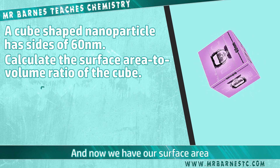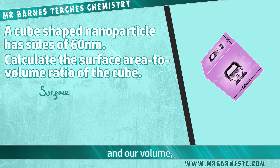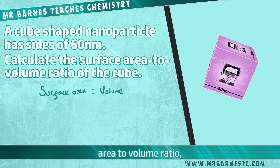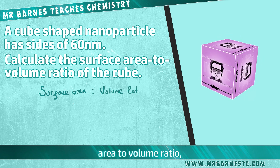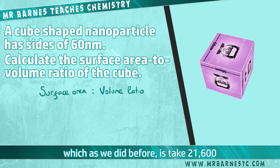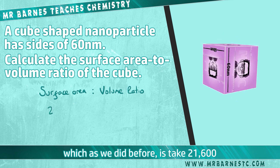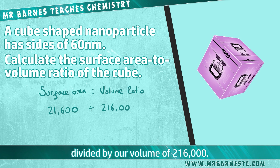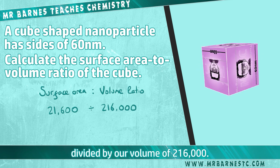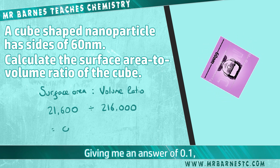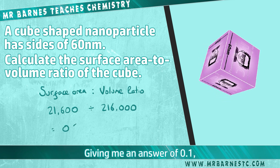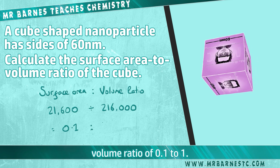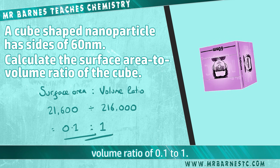Now we have our surface area and our volume, so we can use these two values to work out our surface area to volume ratio. As we did before, we take 21,600 and divide it by our volume of 216,000, giving an answer of 0.1, which when turned into a ratio gives a surface area to volume ratio of 0.1 to 1.